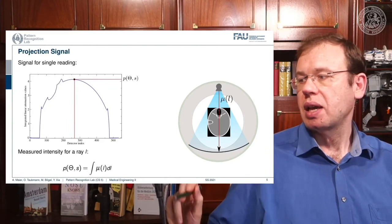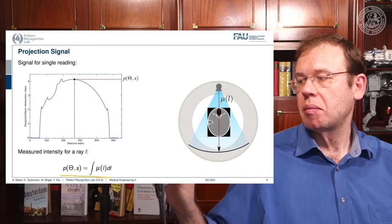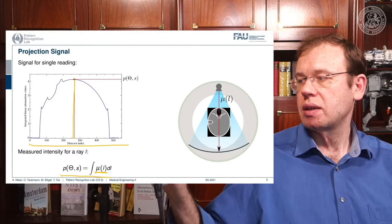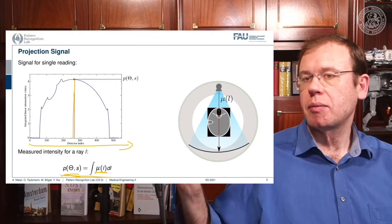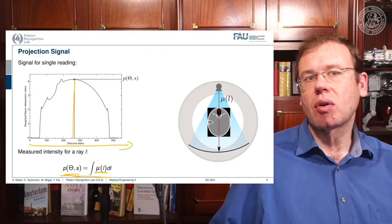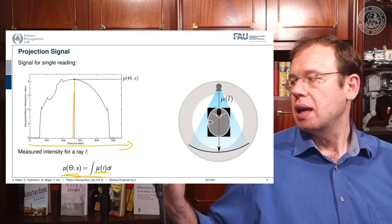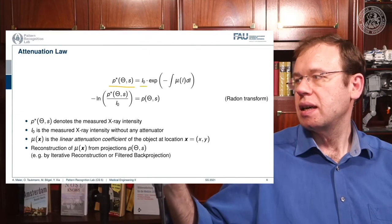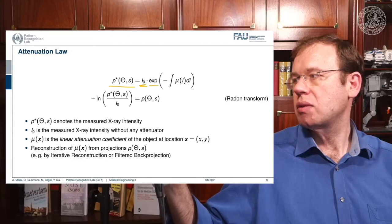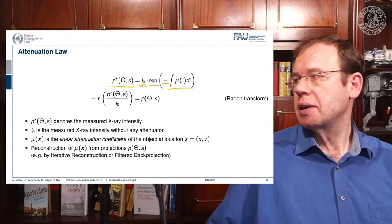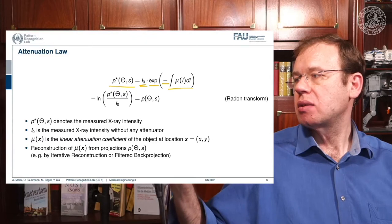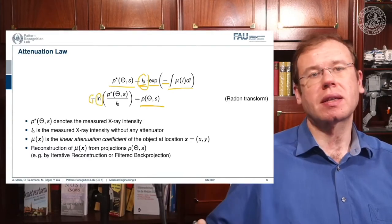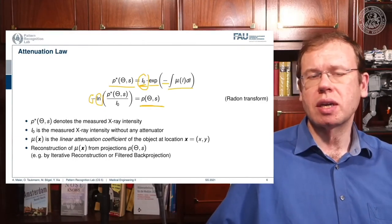A key problem is that we want to get the line integrals correctly. So far we have assumed it is simply the sum of all attenuation coefficients along the ray. One line integral in one detector row is exactly the integral of all attenuation coefficients along that ray. In the idealized configuration, if I₀ is the intensity at the source, we multiply by the exponential of minus the sum of the respective coefficients, then solve for the line integral by dividing by I₀, taking the natural logarithm and the minus. We've seen this concept before.